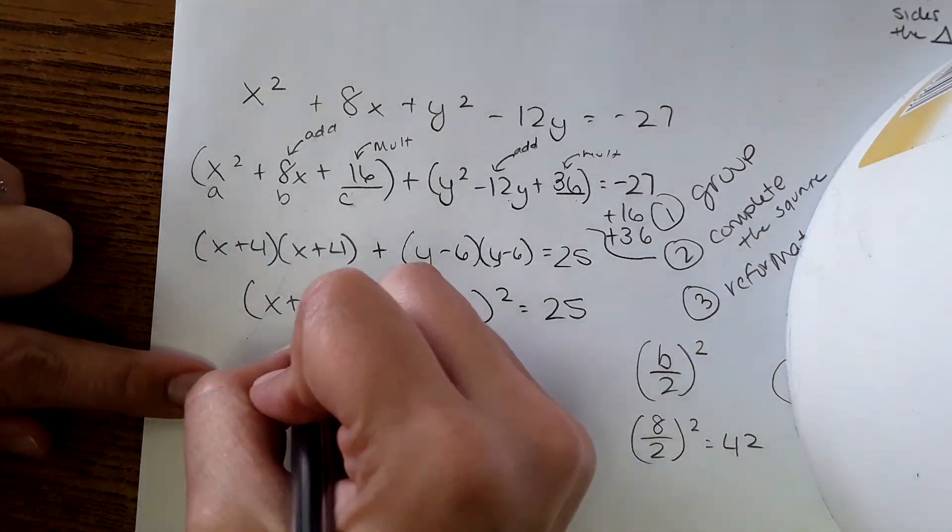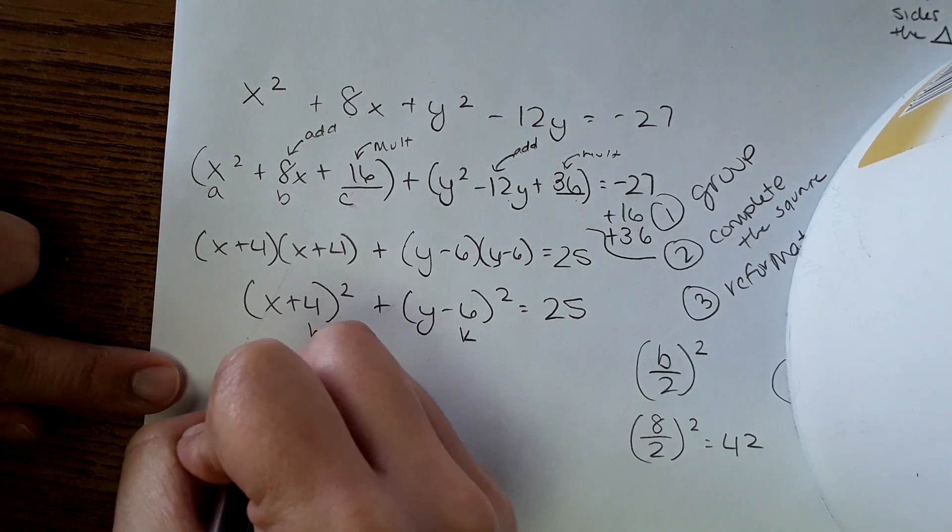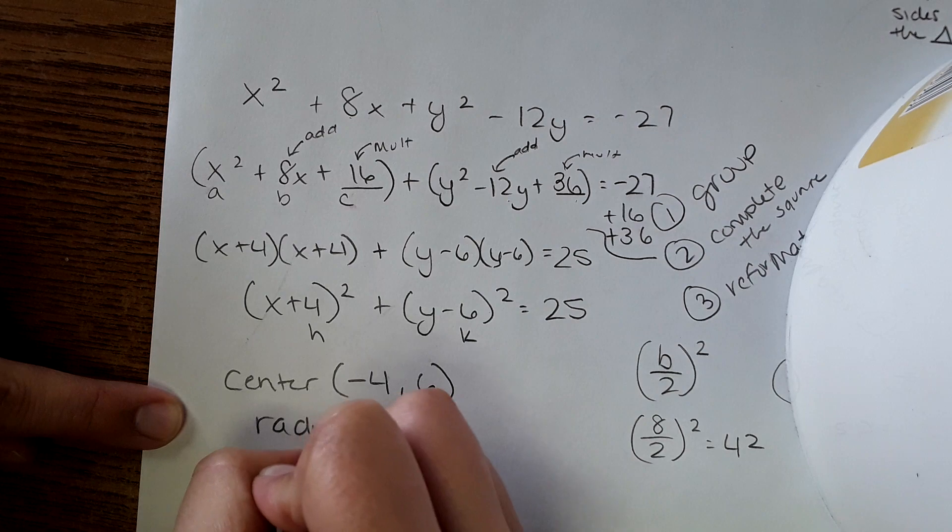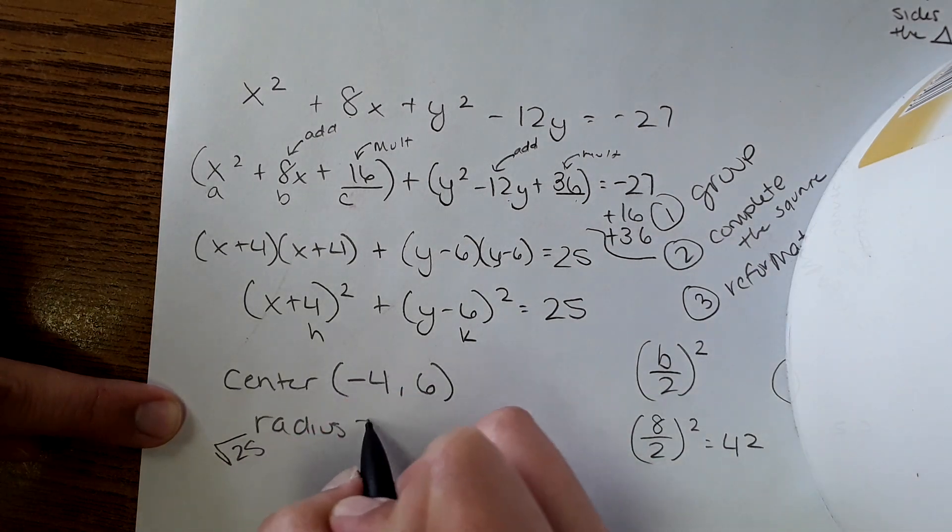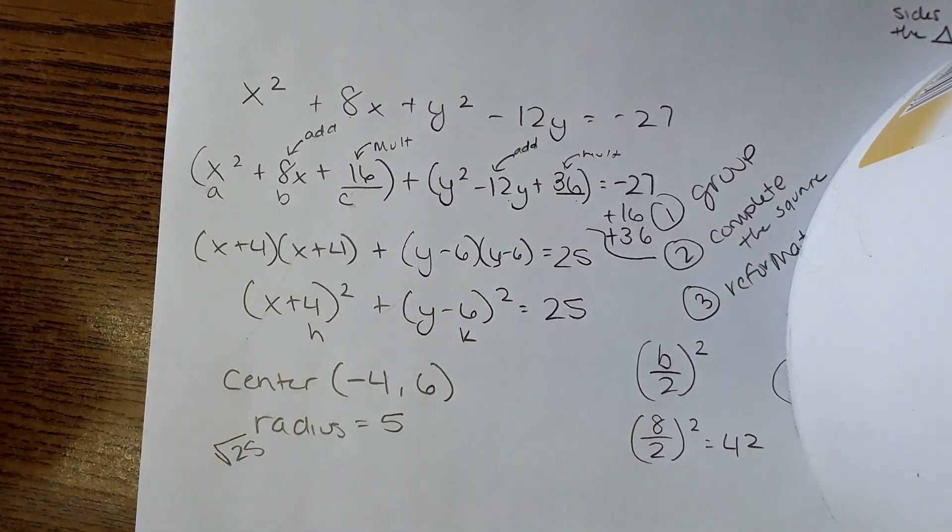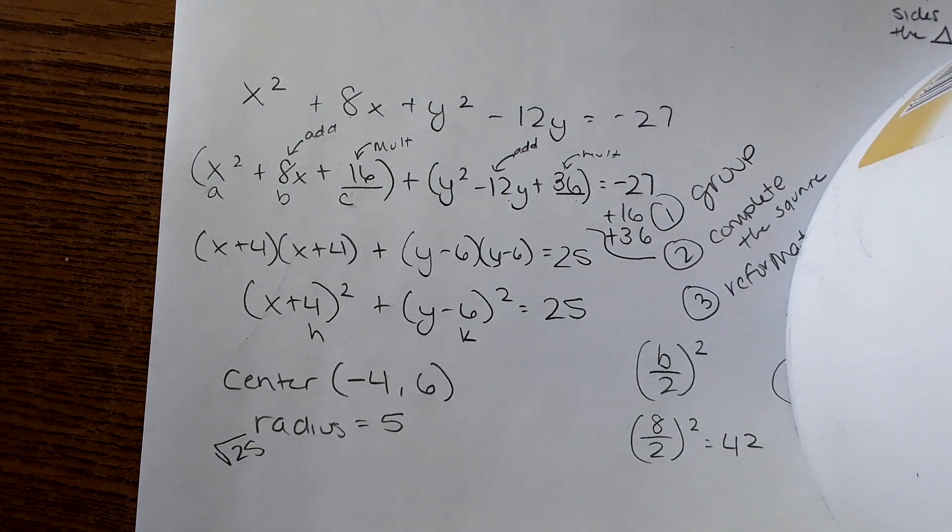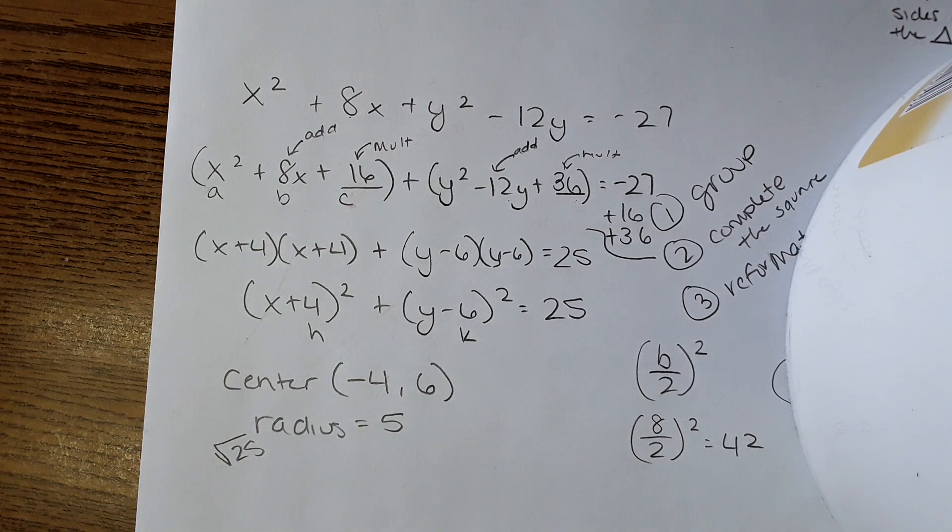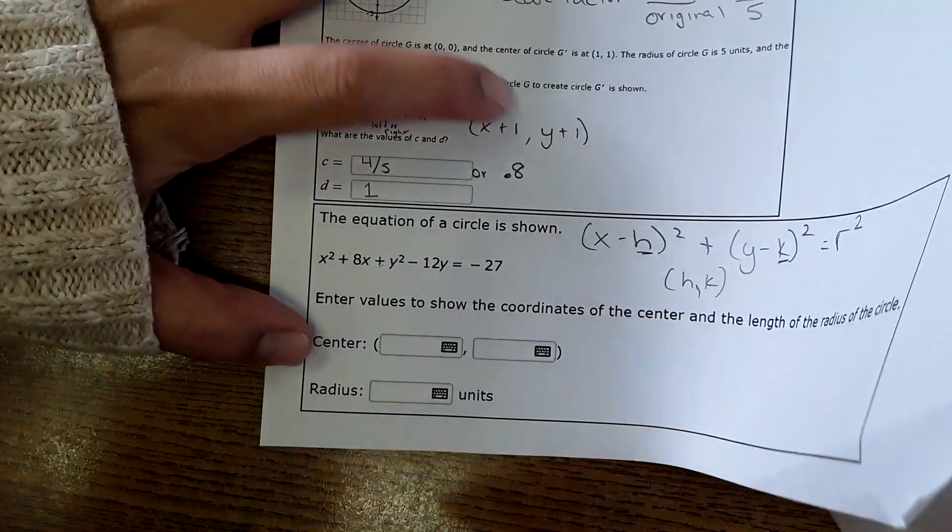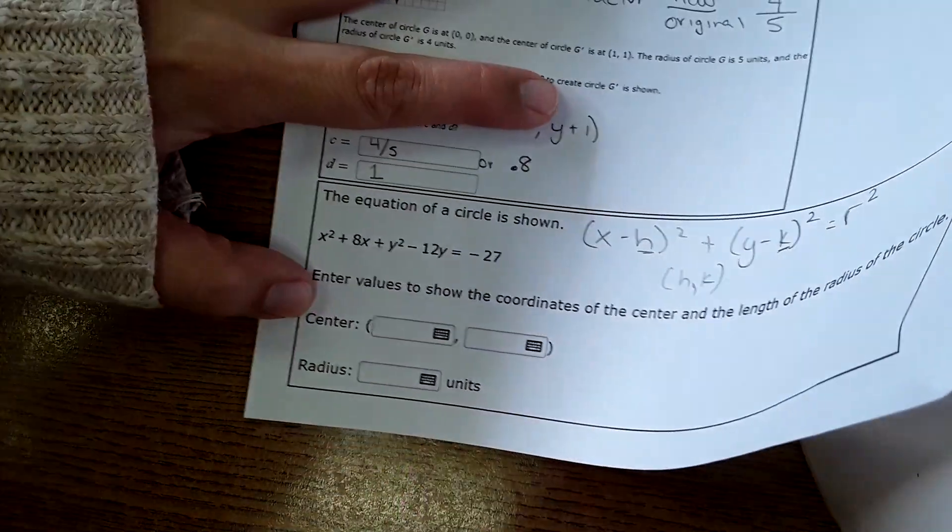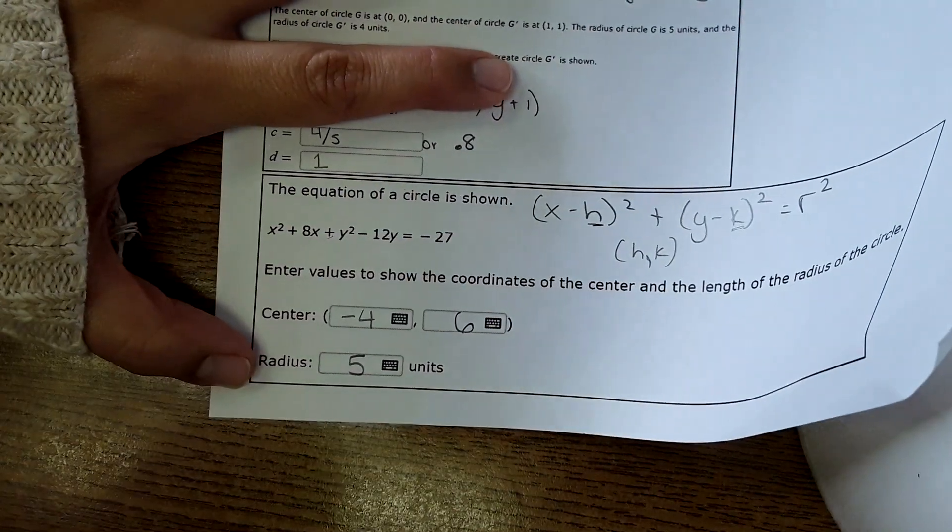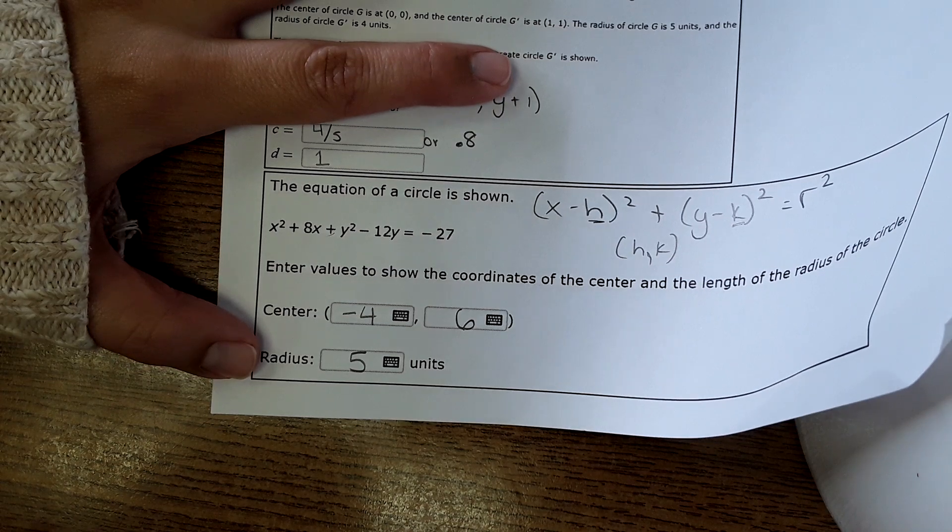And then this would be H and K, the center. So the center is negative 4, positive 6. And the radius, you would take the square root of 25 equals 5. And then on the other side, you would plug that into the equation. So on this side, then our center was at negative 4, 6, radius of 5. And I wish there was an easy way to do it, but there's just not.